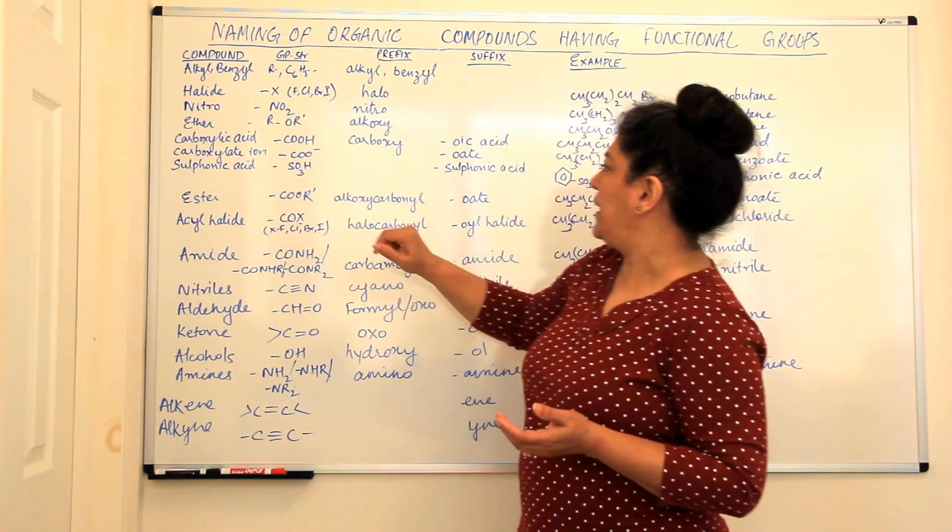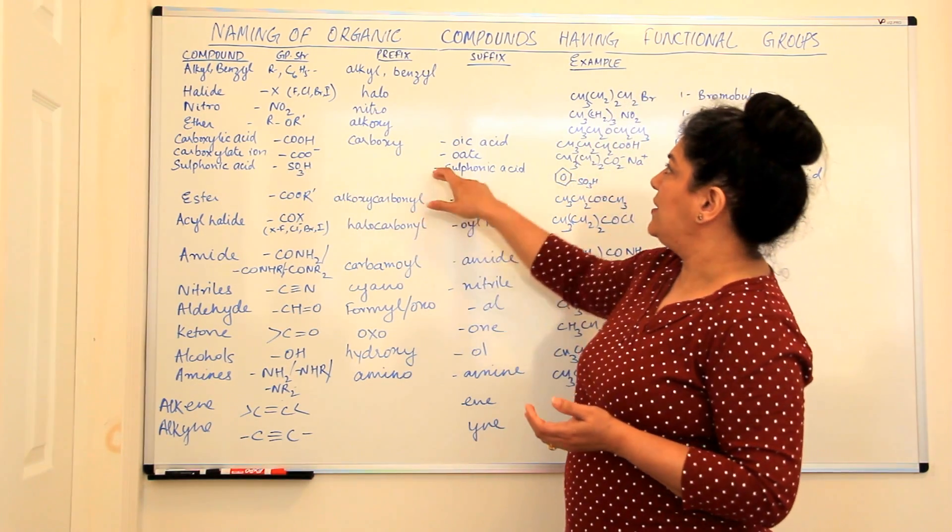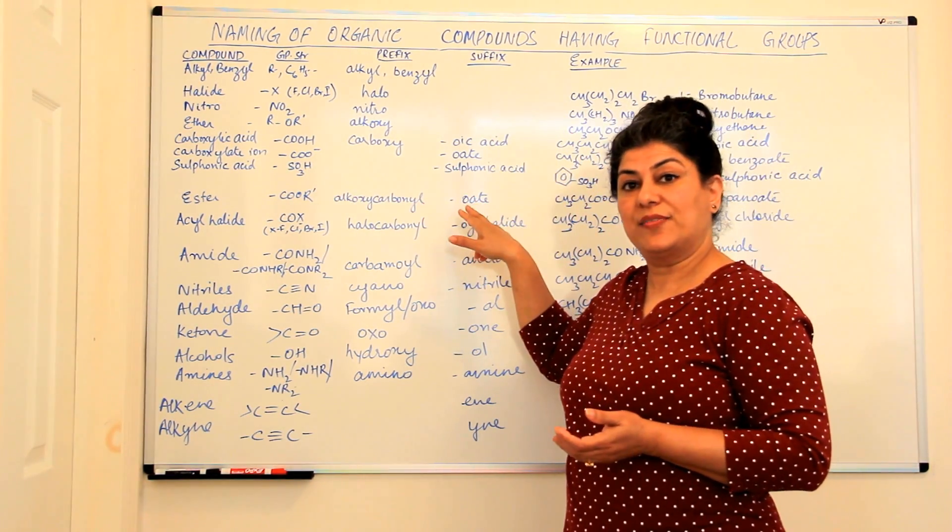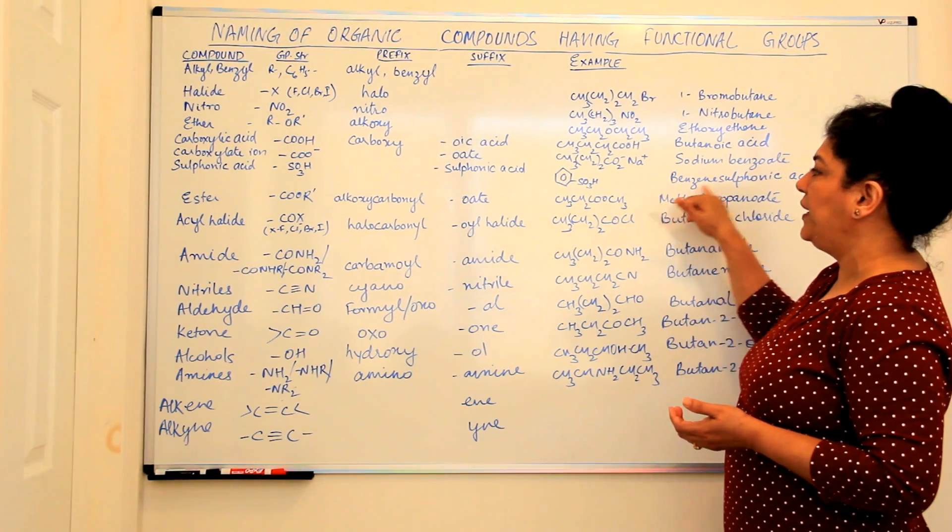Then we come to the sulfonic acid. A sulfonic acid is SO3H and it is also written always as a suffix. That is, sulfonic acid. For example, this is benzene sulfonic acid.